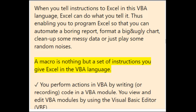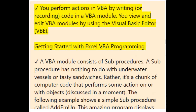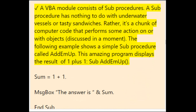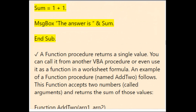A macro is a set of instructions you give Excel in the VBA language. You perform actions in VBA by writing or recording code in a VBA module. You view and edit VBA modules using the Visual Basic Editor (VBE). A VBA module consists of sub-procedures — a chunk of computer code that performs some action on or with objects. For example, a simple sub-procedure called AddMup displays the result of 1+1: Sub AddMup / Sum = 1 + 1 / MsgBox 'The answer is' / End Sub.